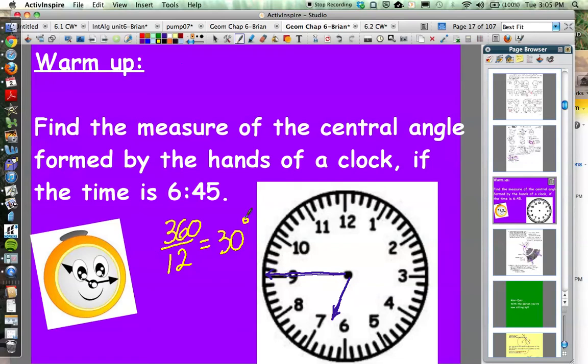So if we think about that, that means that the arc measure between 12 and 1 o'clock is 30 degrees. The arc measure between 1 o'clock and 2 o'clock is 30 degrees. The arc measure between the 2 and the 3 is 30 degrees and so on and so forth. So every one of these is 30 degrees.